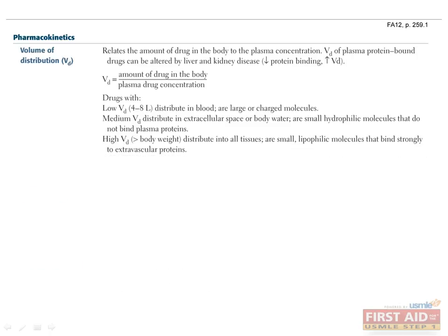The volume of distribution, Vd, relates the amount of drug in the body to the plasma concentration. It is defined as the amount of drug in the body divided by the plasma drug concentration. Drugs that distribute in larger spaces have higher Vd. Small Vd is associated with drugs that are confined to the blood compartment such as large hydrophilic molecules. Medium Vd is associated with drugs that distribute in extracellular space or body water such as small hydrophilic molecules. Large Vd is associated with drugs that distribute through all tissues such as small lipophilic molecules.